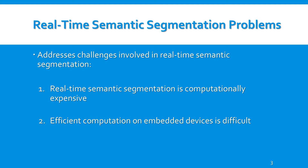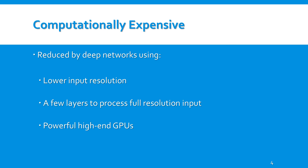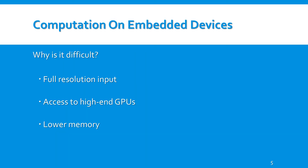It is also difficult to effectively perform real-time semantic segmentation on embedded devices. There are methods to overcome the computational cost of deeper networks, such as using smaller inputs or employing high-end GPUs. However, it is difficult to perform this task efficiently on embedded devices, mainly due to the lack of full resolution input in some devices and the devices having lower memory.